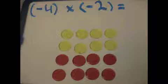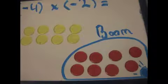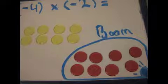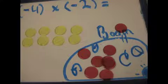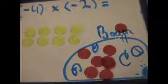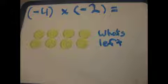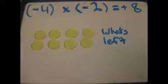When we multiply 2 negatives, it also needs 0 pairs. This equation means take away 4 groups of negative 2. Since I need to take away 4 groups of negative 2, I need to add those and their 0 pairs. Now I need to take away those 4 groups of negative 2. BOOM! BOOM! BOOM! BOOM! In the aftermath, what's left? Positive 8!